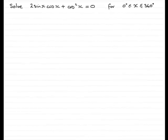Hi. Welcome to this example on solving trig equations. In this example, we've got solve 2 sine x cos x plus cos squared x equals 0 for x between 0 degrees and 360 degrees inclusive.